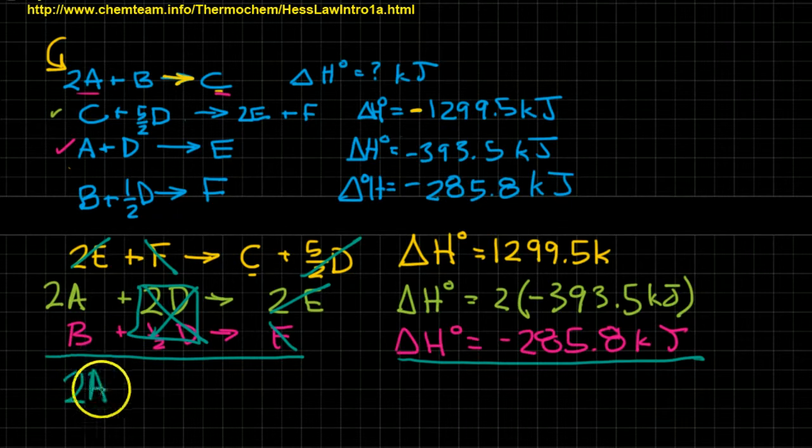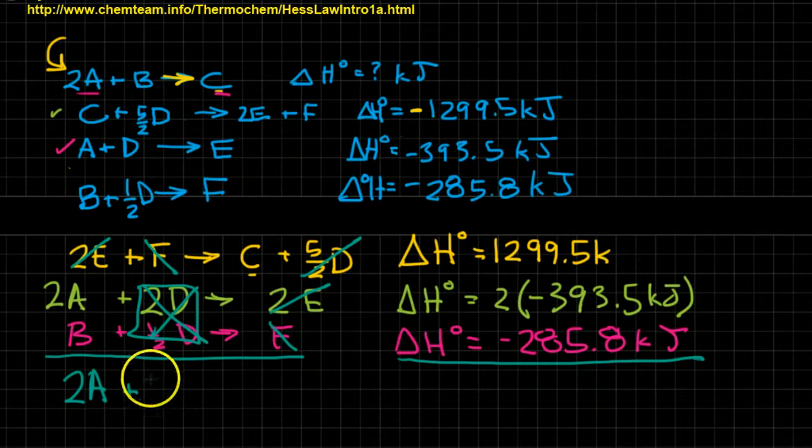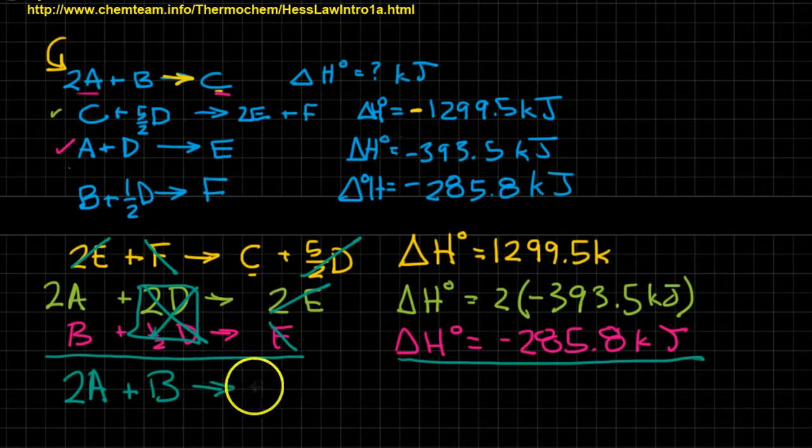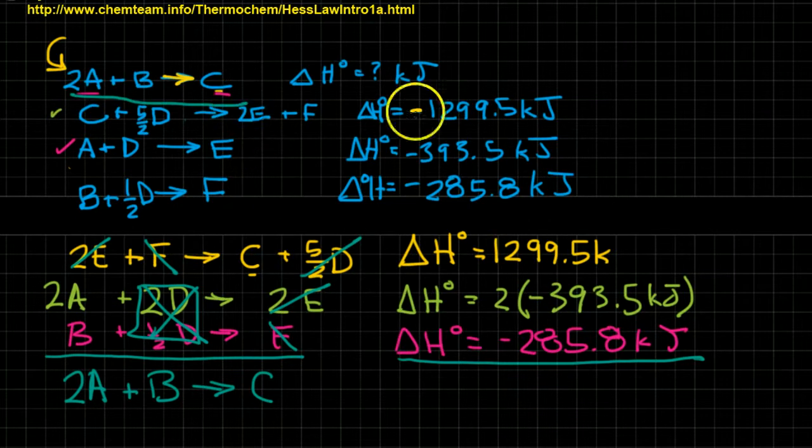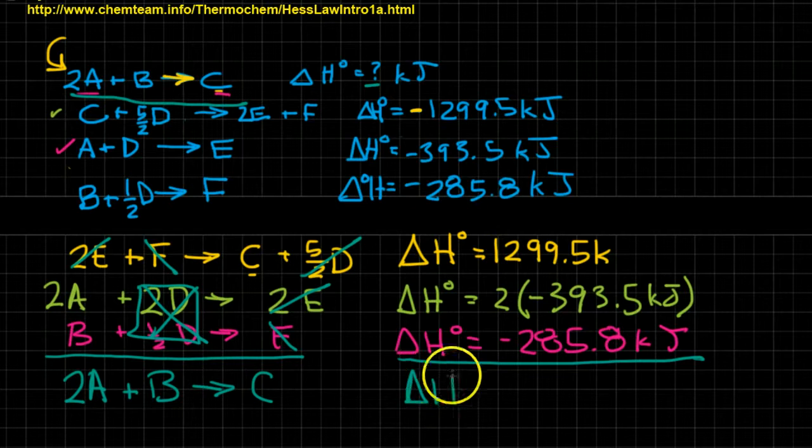So 2A plus B yields C, which is exactly what we were looking for to begin with. The only thing is we didn't know this value, but now we can know it. So now I'm going to say, finally, the answer is the sum of all these things I've combined and flipping things around. So let's do that together.